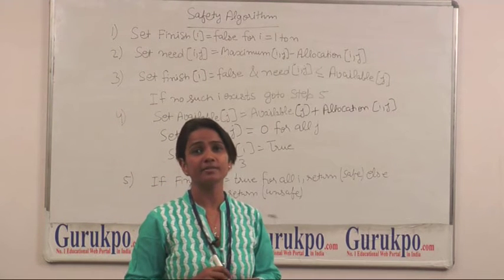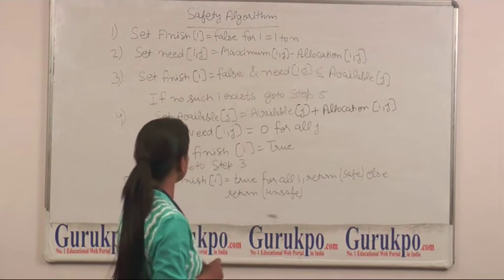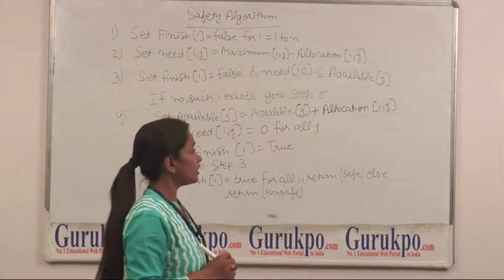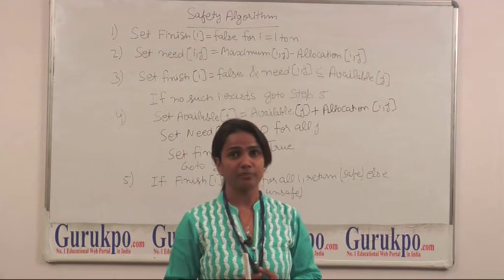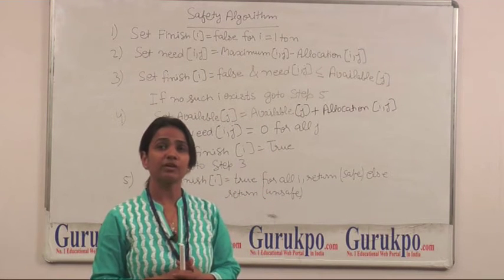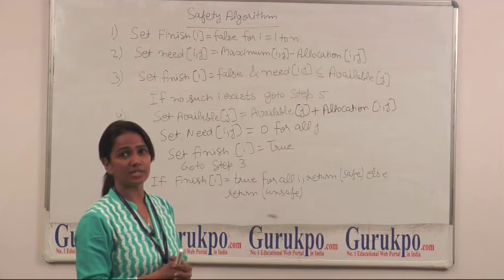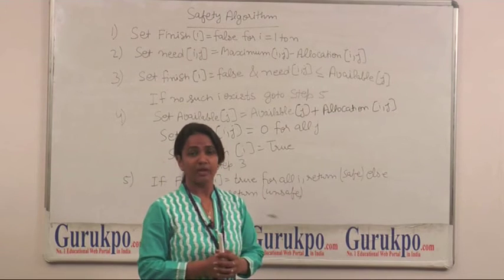That means we calculate the need of each process. In step 3, if finish equals false, then we will check the need should be less than availability. If it is true, then we go to step number 4. Otherwise, we go to step number 5 and return unsafe state.